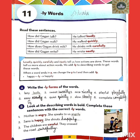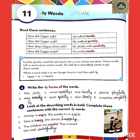How did Gagan write? He wrote neatly. So here the words loudly, quickly, carefully, and neatly — these tell us how actions are done.